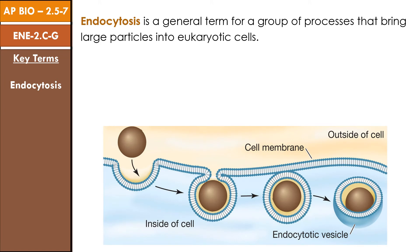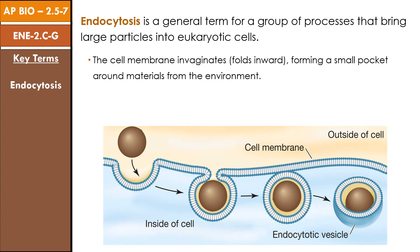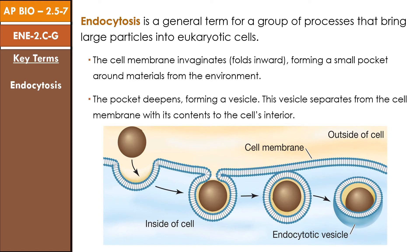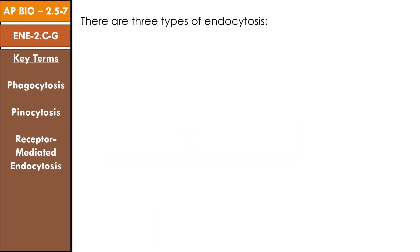Endocytosis is a general term for a group of processes that bring small molecules, macromolecules, large particles, and even small cells into eukaryotic cells. The cell membrane invaginates, or folds inward, forming a small pocket around materials from the environment. The pocket deepens, forming a vesicle that separates from the cell membrane and carries its contents into the cell interior. There are three broad types of endocytosis: phagocytosis, pinocytosis, and receptor endocytosis.